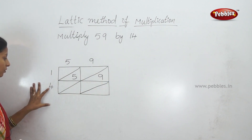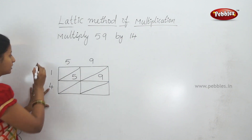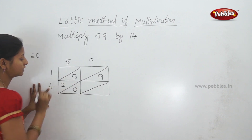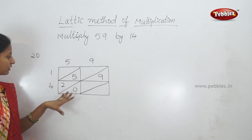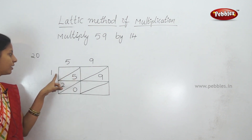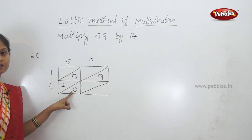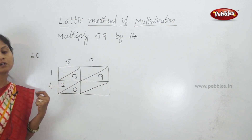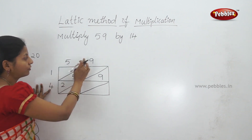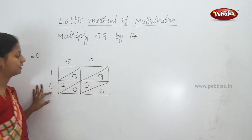Next, 1 times 9 is 9. Second row: 4 times 5 is 20. Now we have 20, a 2-digit number. So we write 2 in the left part and 0 in the right part of the box — 2, 0 for 20. Then 4 times 9 is 36, a 2-digit number: we write 3 and 6.